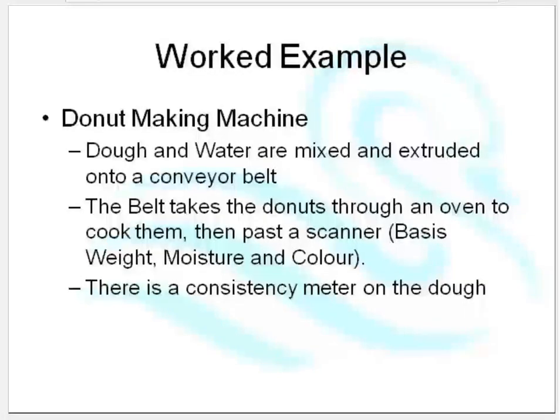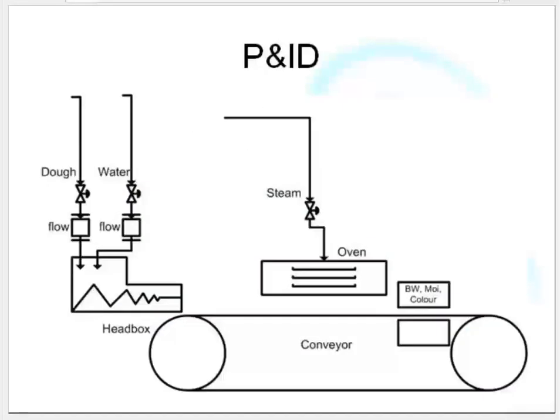Then I'm going to go past a scanner where I'm going to measure what's called basis weight, which is the weight of it. I'm going to measure the moisture and I'm going to measure the color. In addition to this, I have a consistency meter on the dough. Consistency is the stickiness of the thing, it's not density exactly, it's stickiness, that's the best I can describe it.